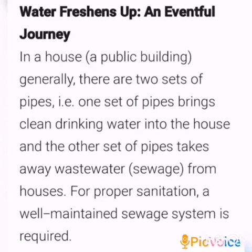Water's eventful journey. In a home or a public building, generally there are two sets of pipes. One set of pipes brings clean drinking water into the house and another set of pipes takes away wastewater from the houses. That is the reason for using two sets of pipes in our home or any public building.